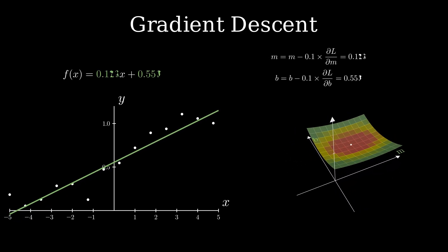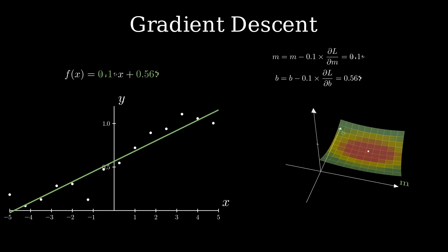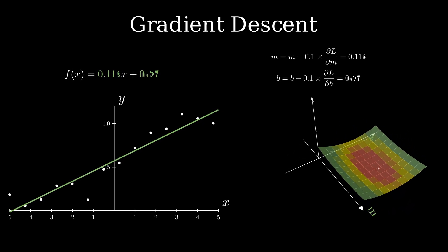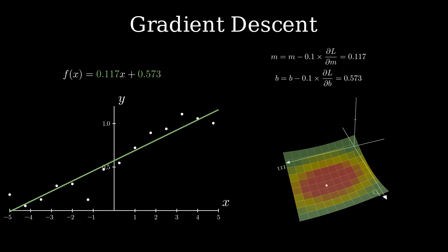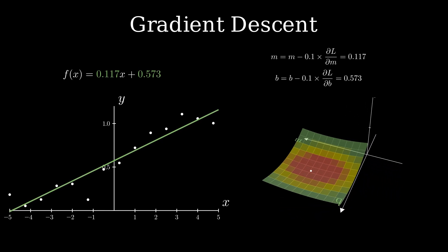Amazing thing about this is that as it approaches minimum, derivatives get really small which results in even smaller steps and this becomes zero at the minimum. This is when the model has converged.